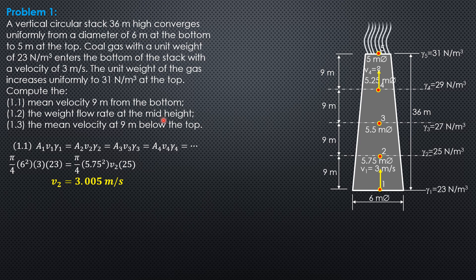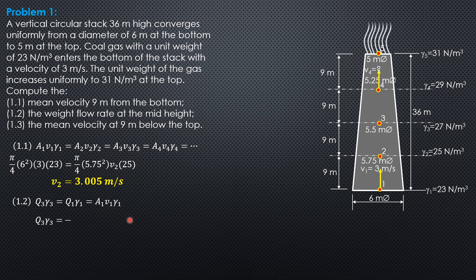For the weight flow rate at mid-height: since the weight flow rate Q3·γ3 is constant by continuity, it equals the weight flow rate at section 1. So Q3·γ3 = A1·V1·γ1 = pi/4 × 6² × 3 × 23. Therefore, the weight flow rate at mid-height is equal to 1951 newtons per second.